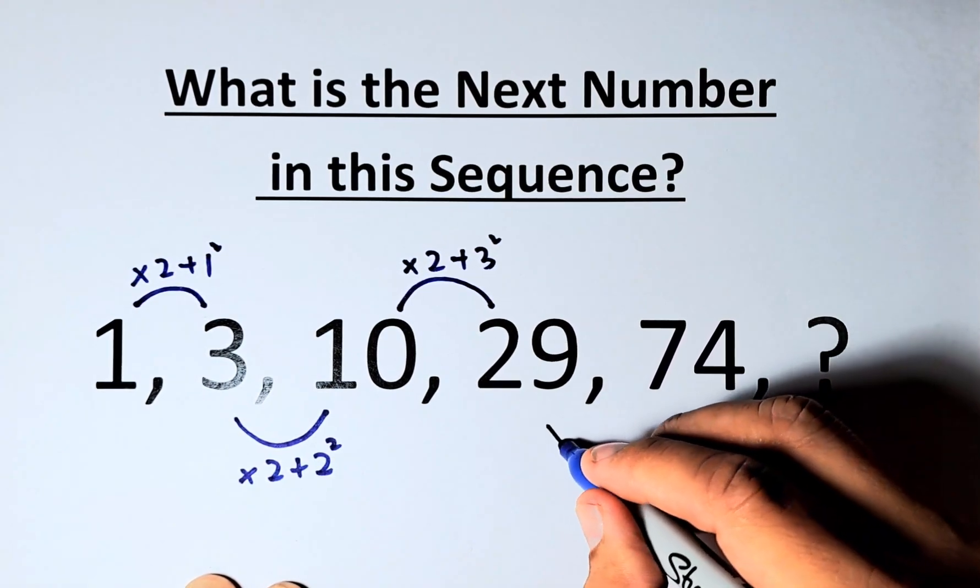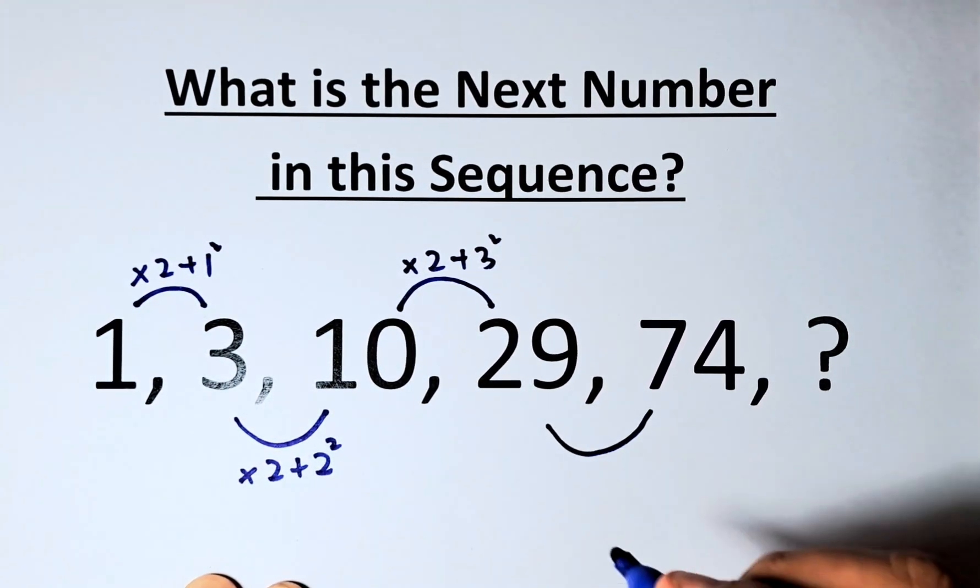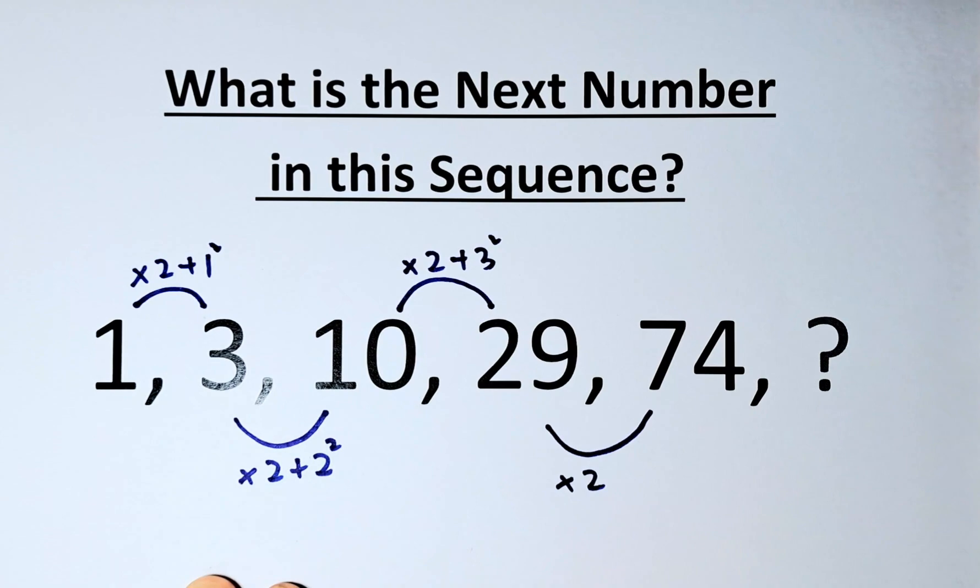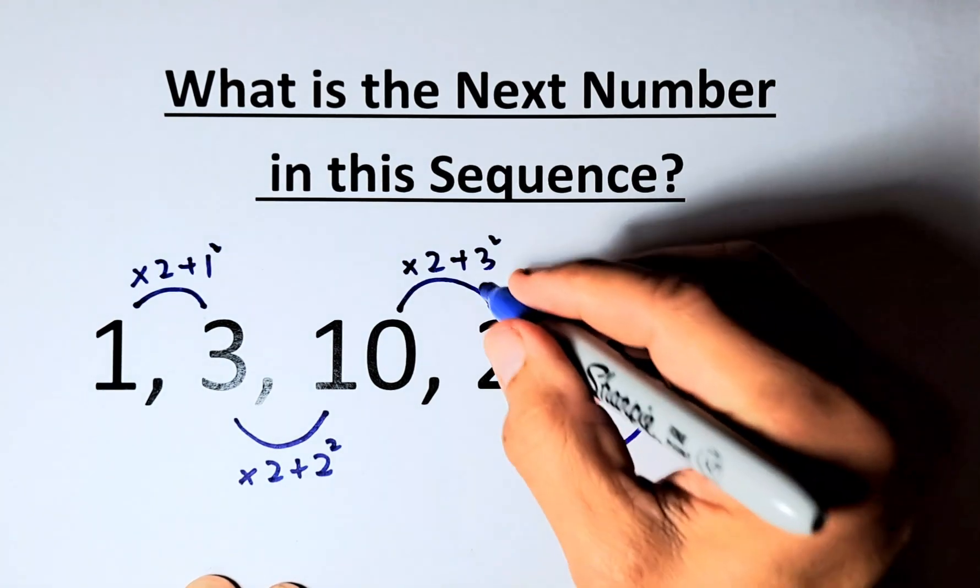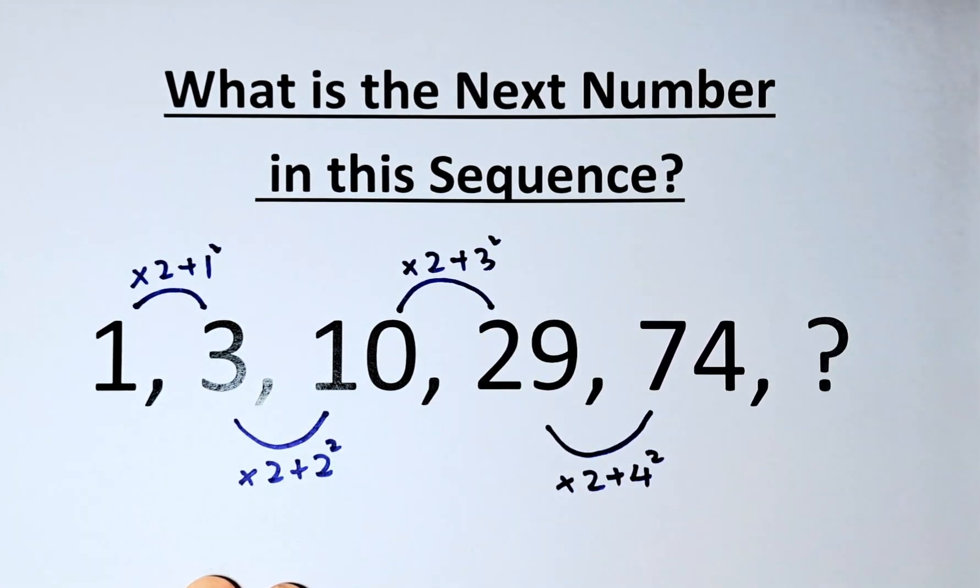Next step, 29 to 74. 29, we're going to multiply by 2. We always double it. And then this time because the next number is 4, we're going to add 4 squared. So 29 times 2 is 58. 58 plus 16 which is 4 squared is going to give us 74.